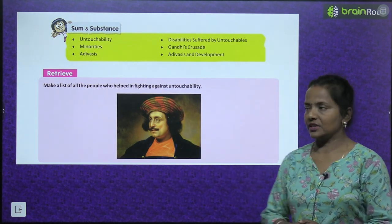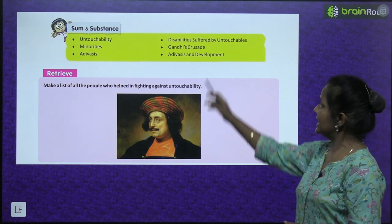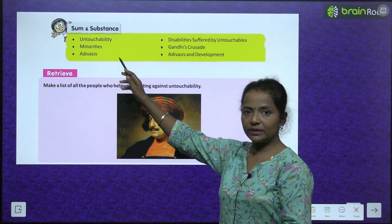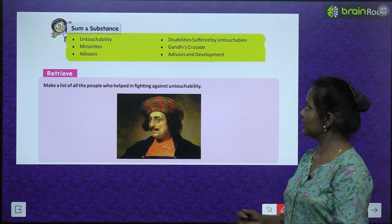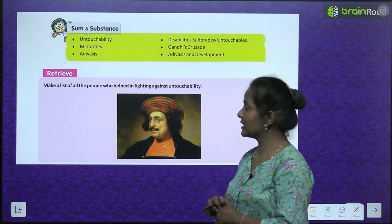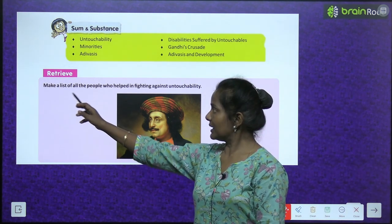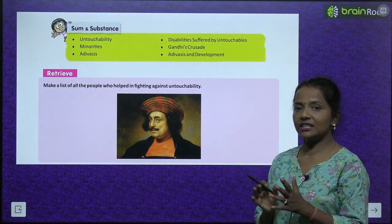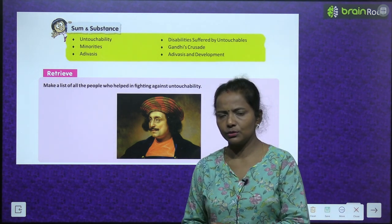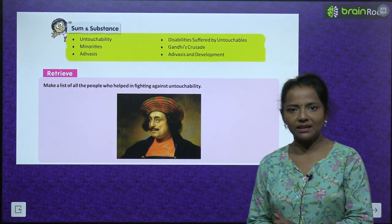Sum and substance. The topics we are going to read are: Untouchability, Disabilities suffered by untouchables, Minorities, Minority groups, Gandhiji's crusade, Adivasis, Adivasis and development. Retrieve: make a list of all the people who helped in fighting against untouchability.